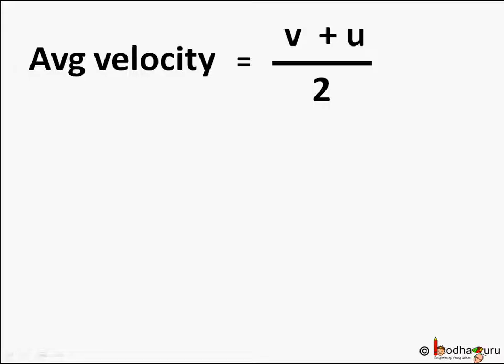Let us find another formula. If the object is travelling at a uniform acceleration, that is increase in speed is same for every time interval, then average velocity is equal to v plus u by 2.